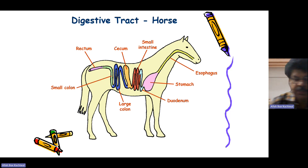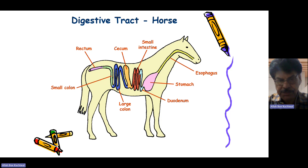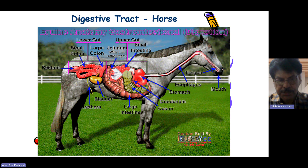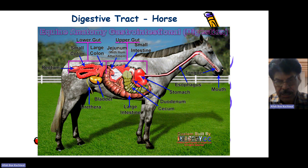The digestive tract of the horse has the mouth, esophagus, and stomach. In the small intestine there is the duodenum and ileum, and in the large intestine there is the cecum and colon. The cecum is the largest portion of the large intestine because the horse is a hindgut fermentator — they eat and then digest most ingredients in the cecum.